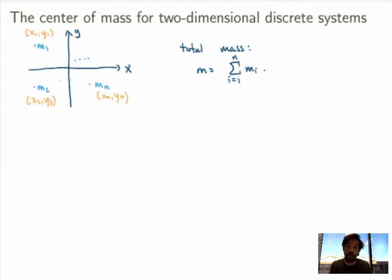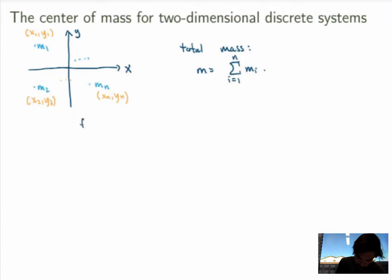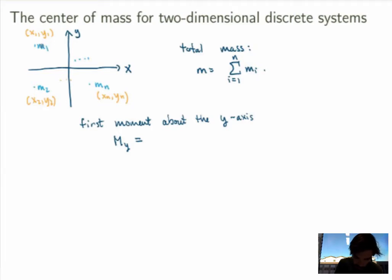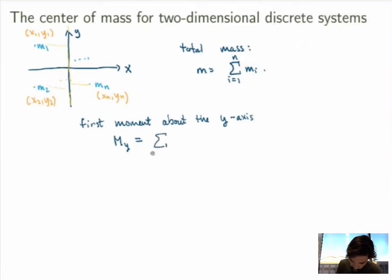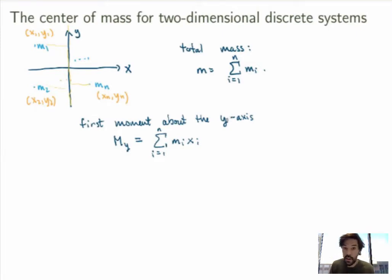Now it's a little harder to generalize the notion of first moments. In one dimension the first moment was mass times its position. In two dimensions we have to generalize it in two different ways. First, the first moment about the y-axis, which I'll call MY, is given by the sum from i equals 1 to n of the masses times their distance from the y-axis, which is the x-coordinate. It's important not to make the mistake: there's a Y because it's the moment about the y-axis, but the x's enter because distance from the y-axis is given by the x-coordinates.